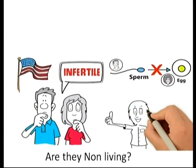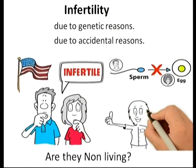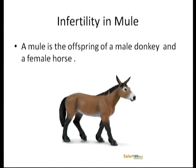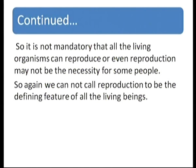However, consider a couple that is infertile due to genetic or accidental reasons and cannot reproduce — are they non-living? Take the example of a mule, which is the hybrid offspring of a male donkey and a female horse. A mule also cannot reproduce. So reproduction is not mandatory for all living organisms. Therefore, we cannot call reproduction the defining feature of all living organisms.